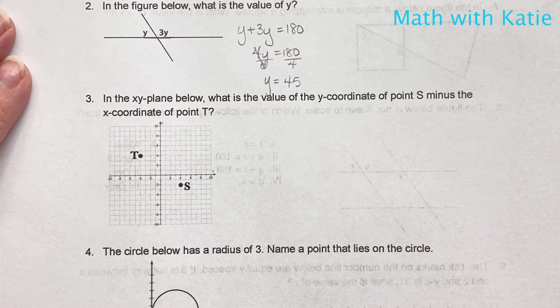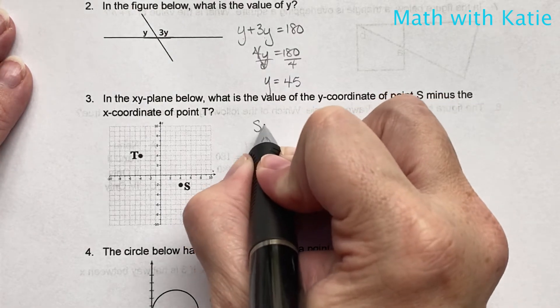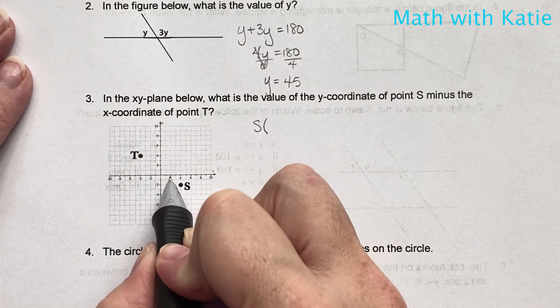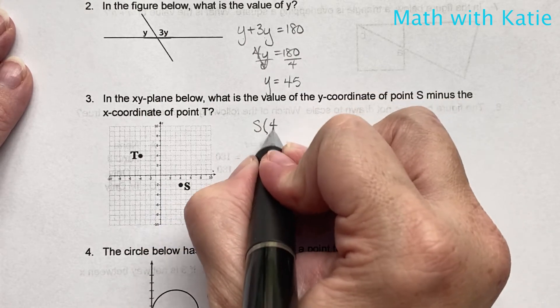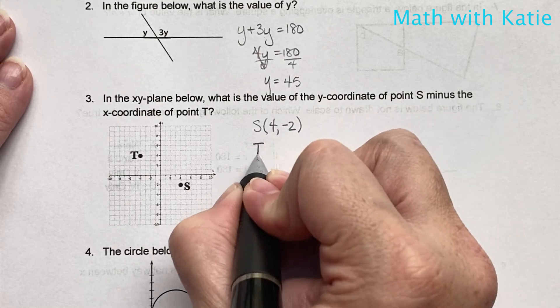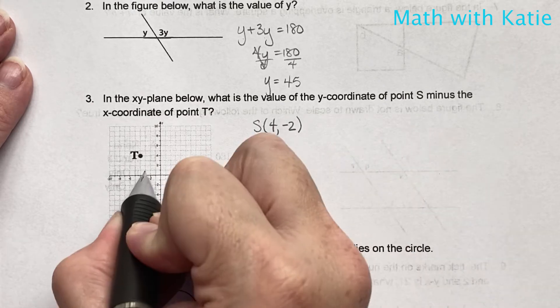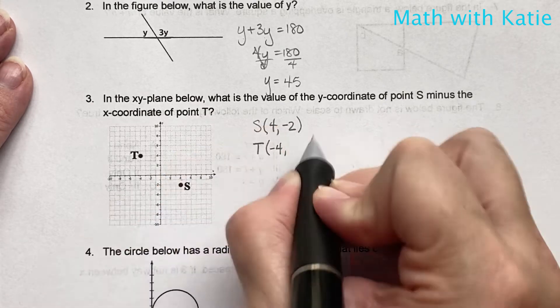In the xy-plane below, what is the value of the y-coordinate of point S minus the x-coordinate of point T? So, point S is 1, 2, 3, 4, and then down 2. And T is 1, 2, 3, 4, so negative 4. Then up 1, 2, 3, 4.